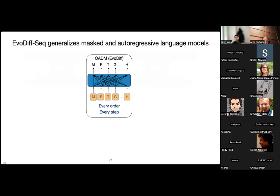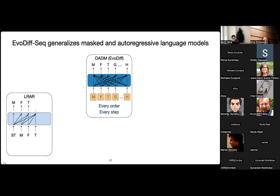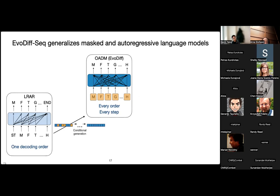An interesting note about EvoDiffSeq — the order-agnostic diffusion model — is that it generalizes two previously commonly used language models: the masked language model scheme and the autoregressive language model scheme. In the left-to-right autoregressive language model, you start from a start token and always look at the previous tokens to decide what to generate next. This constrains you to one decoding order. The benefit is your model has to learn less, because it only has to learn to generate left to right. The downside is you can't as easily do conditional generation — where you fix certain parts of your sequence, mask parts you want to regenerate, and generate around the parts you want to hold fixed — because the model is only trying to go left to right.